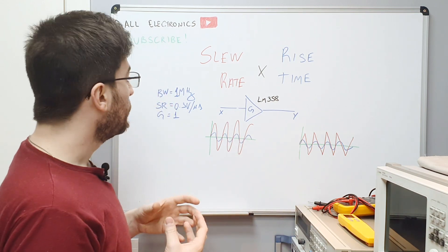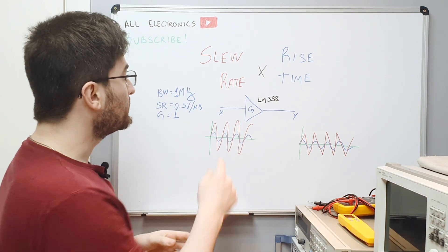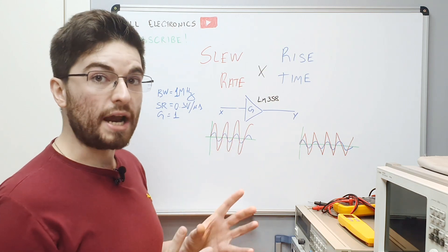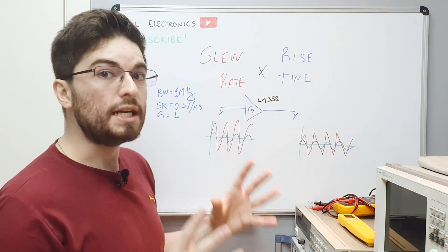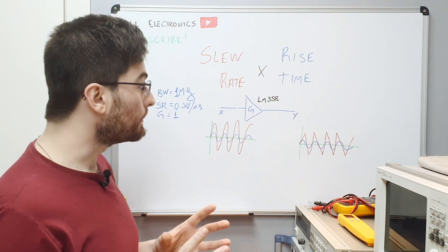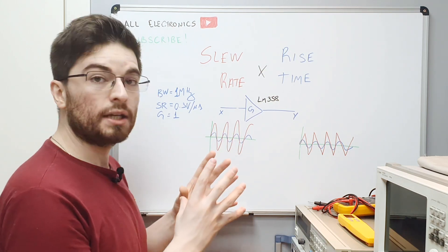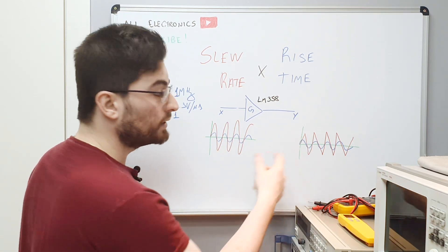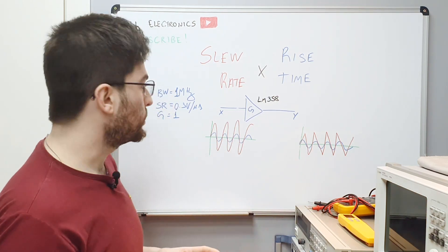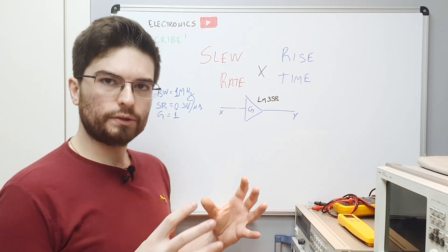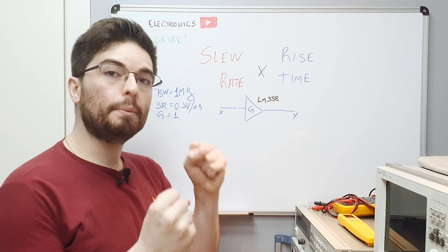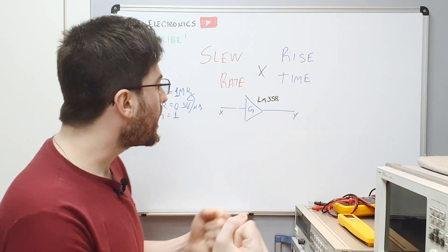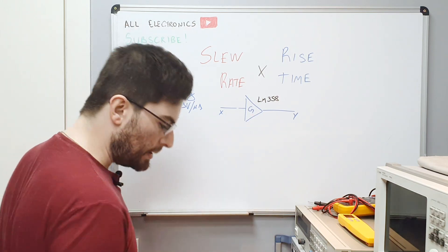When we are talking about slew rate—a nonlinear operation, a nonlinear parameter—we are talking about distortion, about harmonic distortion. Let's try to understand where the bounds between small signal and large signal are in this example.